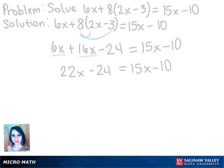Now all we want is for x to be on one side. Just to keep things positive, I'm going to keep it on the left side by subtracting 15x from both sides. Those cancel out, and then we get 7x minus 24 equals negative 10.